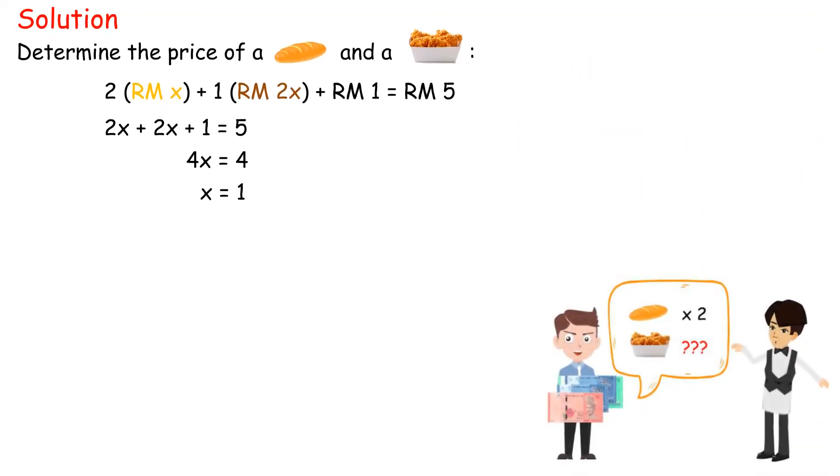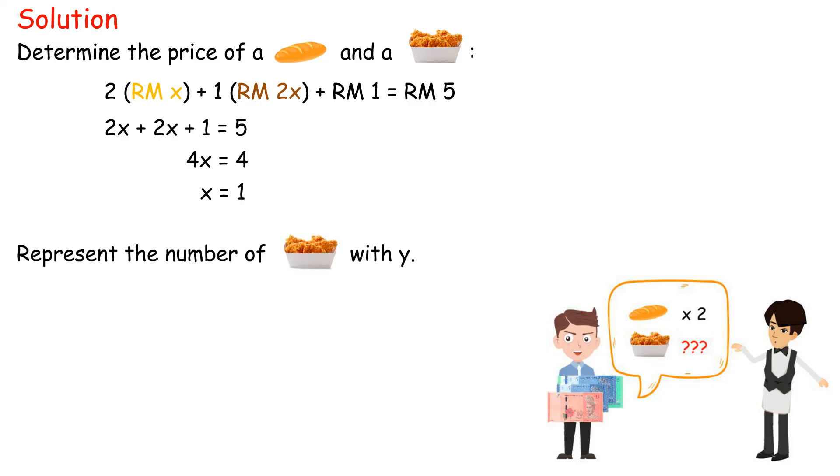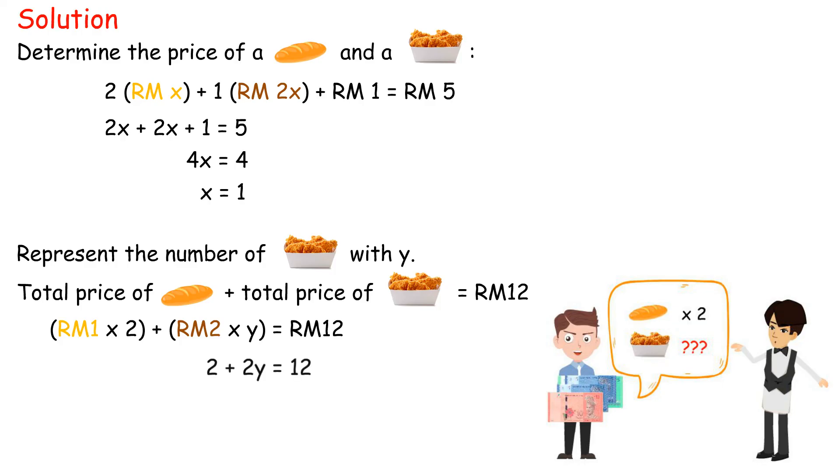Determine the number of fried chickens that can be bought if Asman uses RM12 and buys the same number of buns. Represent the number of fried chickens with y. Total price of buns plus total price of chickens equals RM12. RM1 times 2 plus RM2 times y equals RM12. 2 plus 2y equals 12. y equals 12 minus 2 divided by 2 equals 5. Thus, Asman gets to buy 5 pieces of fried chicken.